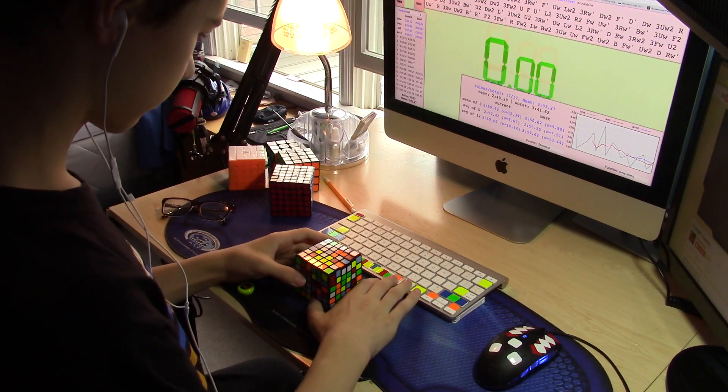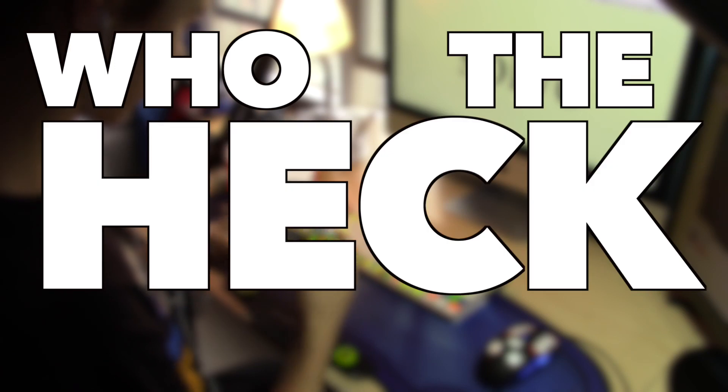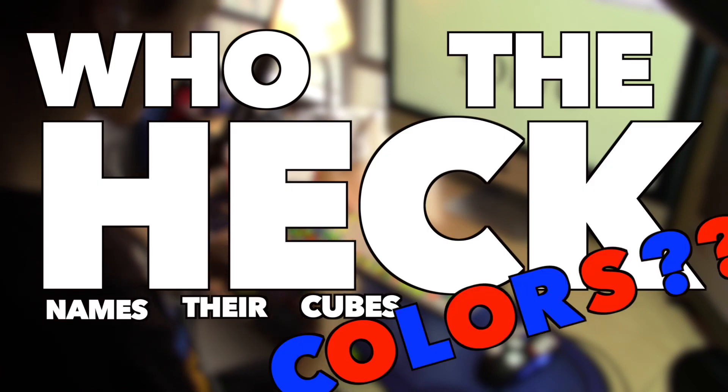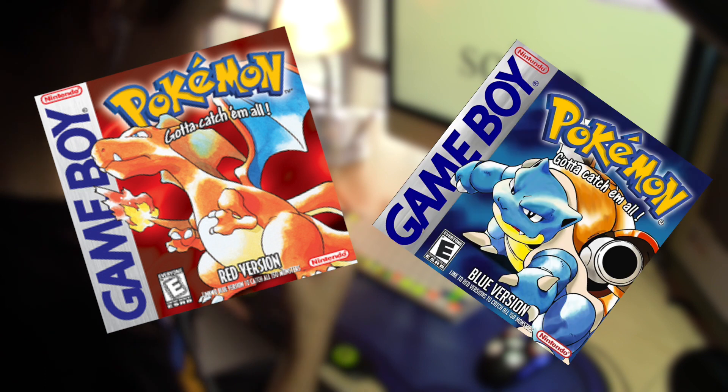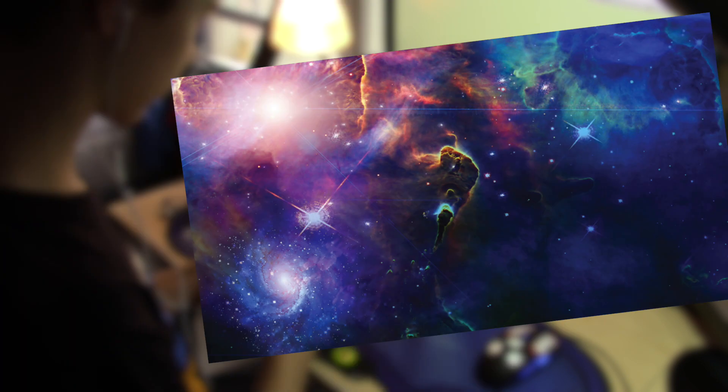Well, let's talk about the most important thing first. Who the heck names their cubes colors? This isn't 1996 Pokemon, Yushin. X-Man got it right and named their cube something cool like Galaxy. Well, enough of that. Anyway,